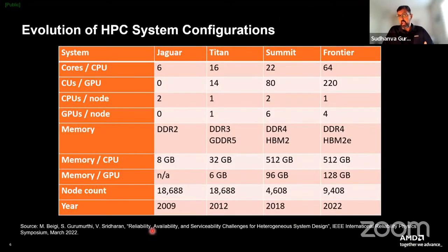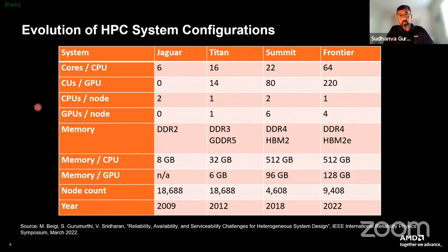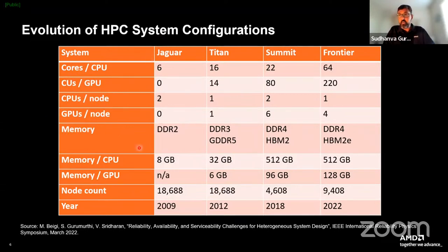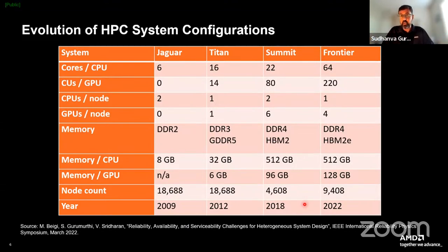These broad industry trends have been enabled by and are driving industry standards. To make a case in point, if you look at HPC systems in this table, each column represents a different supercomputer system — starting from more than a decade ago up to Frontier, the exascale supercomputer that went live recently. Each row corresponds to figures of merit: types of cores, core counts, memory capacity, and node count. Jaguar from around 2009 was a CPU-based DDR-only system. As we see the evolution over time, more types of memory appear in the system. HBM starts getting used, and there are much larger amounts of memory capacity per compute unit with fairly large system sizes.